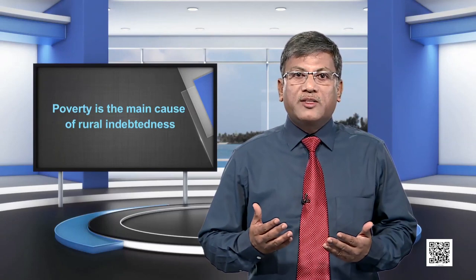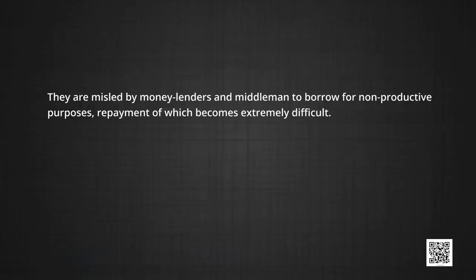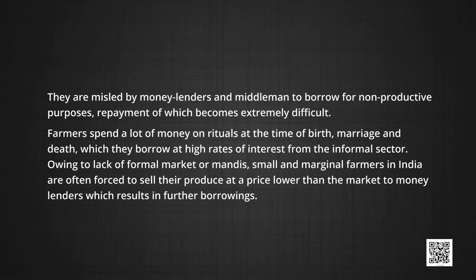Uncertainty in rain is reflected in uncertainty of income, which leads to frequent and regular requirement of loans. A large portion of Indian farmers are illiterate. They are misled by money lenders and middlemen to borrow for non-productive purposes, repayment of which becomes extremely difficult. Farmers spend a lot of money on rituals at the time of birth, marriage and death, which they borrow at high rates of interest from the informal sector. Owing to lack of formal markets, small and marginal farmers are often forced to sell their produce at a price lower than the market to money lenders, resulting in further borrowing. Thus, they are trapped in a vicious circle of indebtedness.